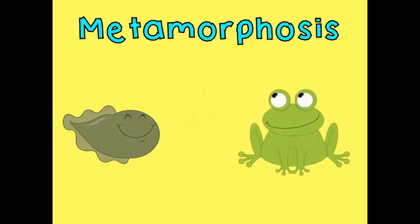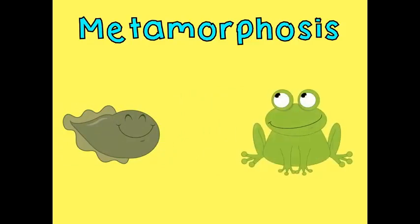The life cycle of a frog goes through a process called metamorphosis. Metamorphosis is the drastic or extreme transformation or change an animal goes through to look like an adult. You can tell when an animal goes through metamorphosis when the young look completely different from the adult. In the example of the frog, when the egg hatches, a tadpole emerges and looks completely different than an adult. That is because a tadpole will have to change a lot to look like its parent. This process is called metamorphosis.